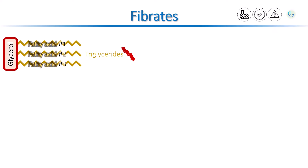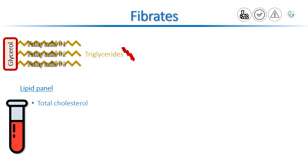We can know if a person has a high level of triglycerides from a lipid panel. A lipid panel usually shows four parameters: total cholesterol, triglycerides, LDL cholesterol, and HDL cholesterol. For a healthy person, triglycerides are lower than 150 mg per deciliter.